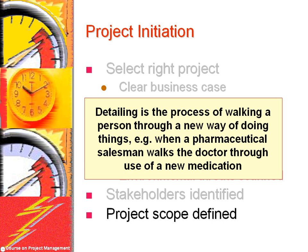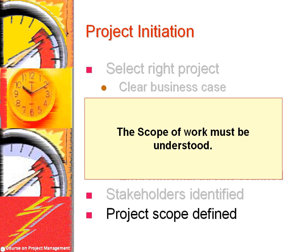For example, in implementing a new computerized physician order entry, a pretend patient visit might be arranged, the clinician is asked to pretend to enter data, and the events in the electronic health record are reported. The point is that the scope of work must be understood by all people affected by the project, so there is no surprise later, and so that the scope can be modified if it is not exactly what is needed.